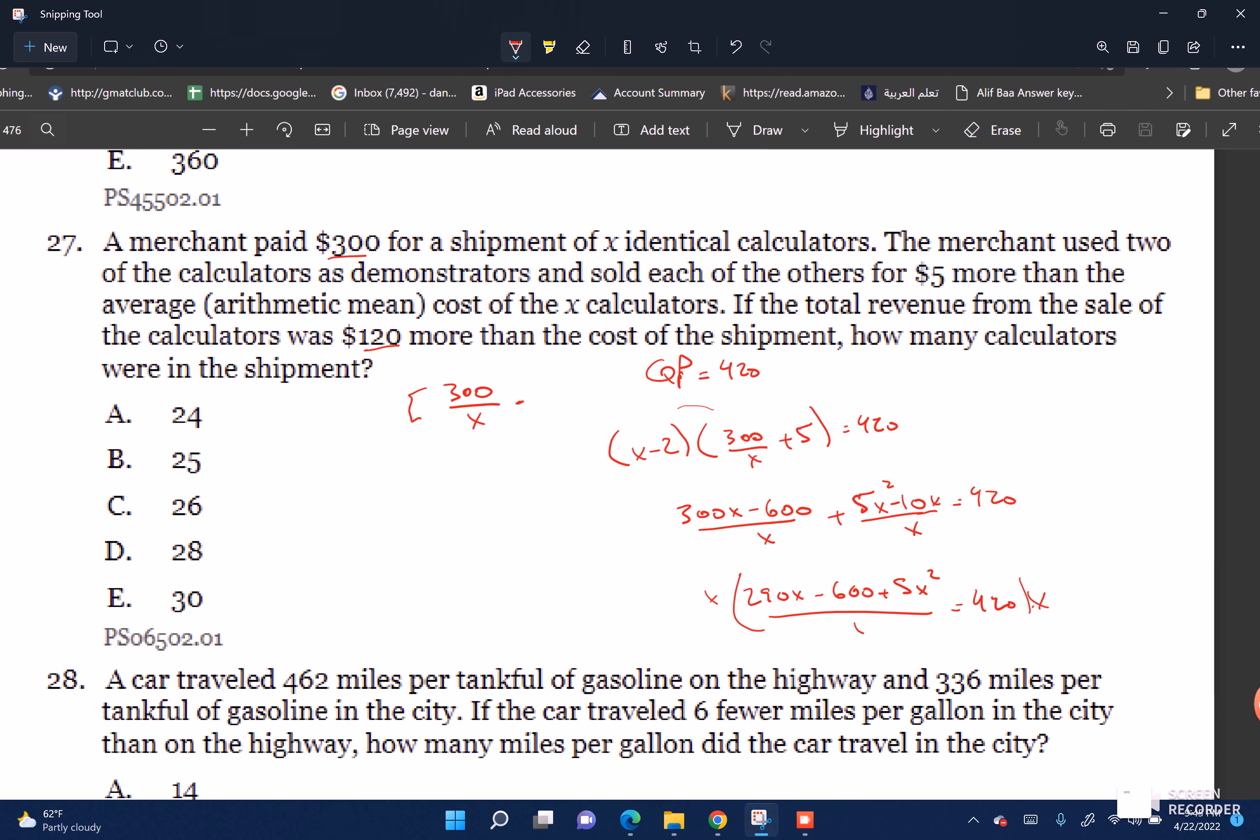Now it looks like a quadratic. Moving everything around: 5X squared minus 130X minus 600 equals 0. I'll divide the whole thing by 5.